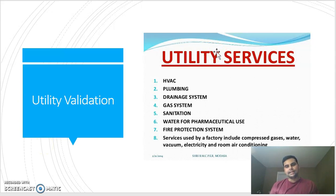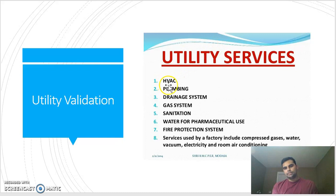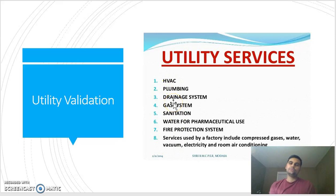Another type of validation is utility validation. For running a manufacturing facility you need water, air, compressed air, brines like hot water, cold water, chilled water, steam, solvents, and WFI — water for injection — among other water types. Utilities also include HVAC (heating, ventilation, and air conditioning), plumbing, drainage systems, gas systems, sanitization water, and fire systems. All of these support services need to be validated.